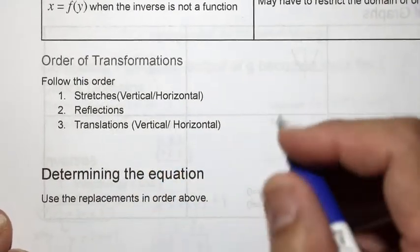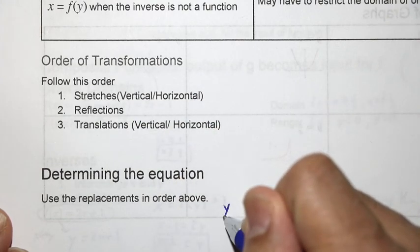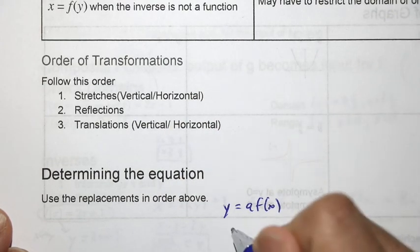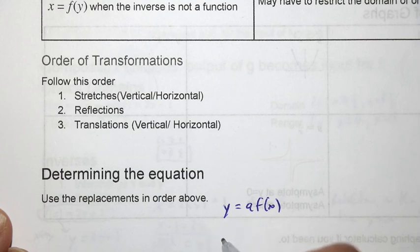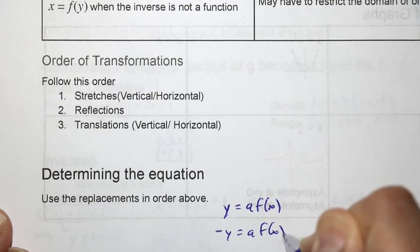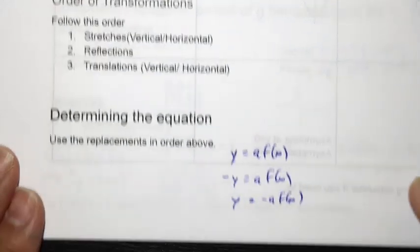For example, if you had a vertical stretch by a factor of 3 and a reflection, then you could say this is y is equal to a times f of x. Then you can replace y with negative y if it's a vertical reflection. So negative y equals a times f of x. And then y is equal to negative a times f of x.